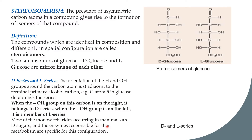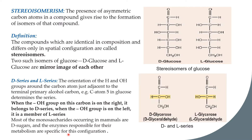Most carbohydrates occurring in mammals are D sugars, and the enzymes responsible for their metabolism are specific for their configuration. Another example is D-glyceraldehyde, where the OH is on the right side, and L-glyceraldehyde, where the OH is on the left side.